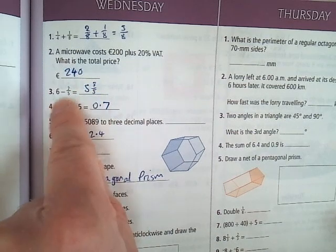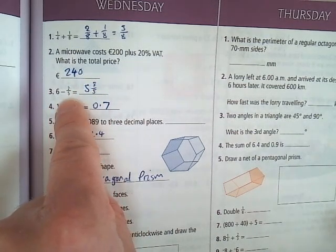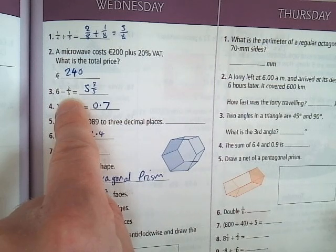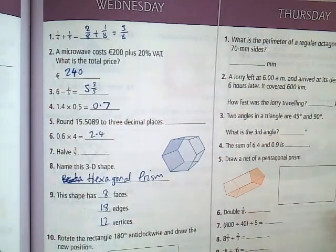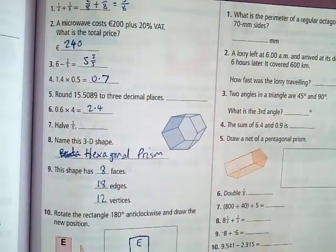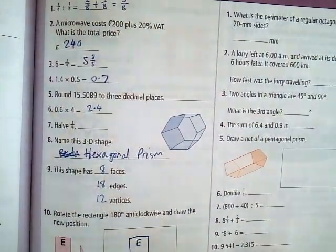Question 3. Six take away 2 fifths. Well, one take away 2 fifths is 3 fifths. So six take away 2 fifths is 5 and 3 fifths. I know that's not very clear because the pen is quite blotchy. Anyway, it doesn't matter.